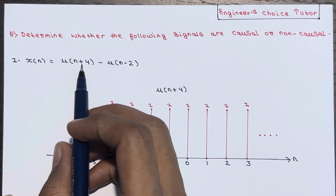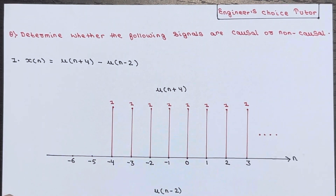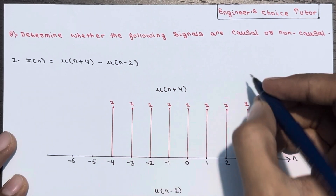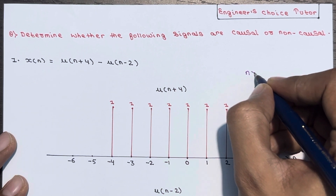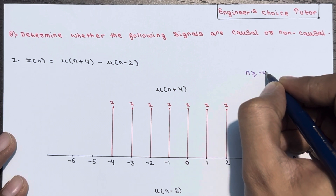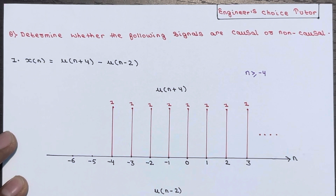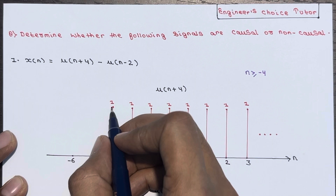is equal to u of n plus 4 minus u of n minus 2. If you plot a graph for u of n plus 4, it means it will be defined for n greater than equal to minus 4. This is what time advancement, so the signal will start from minus 4 itself and the amplitude of the signal is 1.